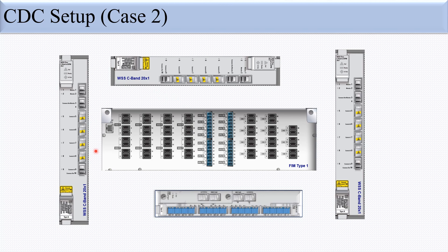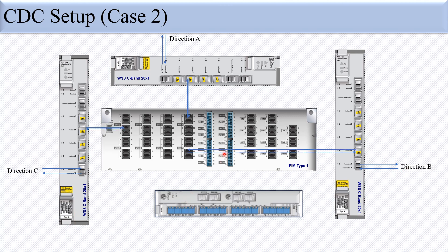In CDC setup case 2, there are three 20x1 WSSes for three directions. There are also FIM type 1 modules and again a CCMD 8x16. For direction A, the common in and common output is connected to the amplifier; similarly for direction B and direction C. The WSS 20x1 switch ports are connected to the FIM WSS ports for the respective directions.